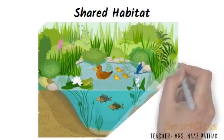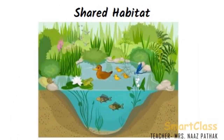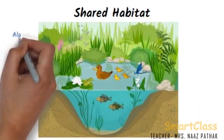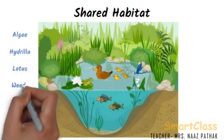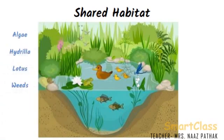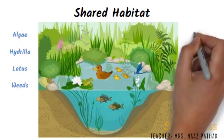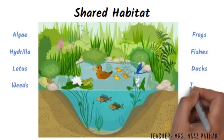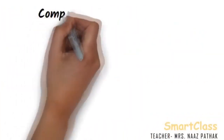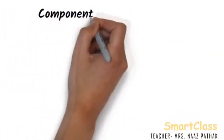Several kinds of plants and animals may share the same habitat. For example, a pond is a habitat which has many plants like algae, hydrilla, lotus, weeds, etc. Pond also has many animals like frogs, fishes, ducks, turtles, etc. Let us study about components of habitat.